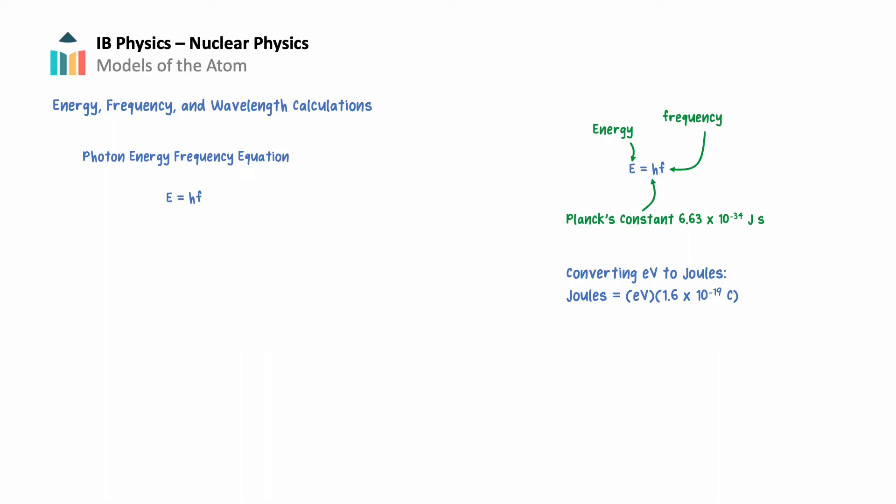Combining the photon energy frequency equation with the wave equation, we can also determine the wavelength of the photon. The wave equation is V equals F lambda, where V is the velocity, F is frequency, and lambda is the wavelength. When dealing with photons and electromagnetic radiation, the velocity is equal to the speed of light, C. Solving the equation for F, we get F equals C divided by lambda. Then substituting in C divided by lambda for F, we get E is equal to H times C divided by lambda. To solve for the wavelength, we multiply both sides by lambda and divide both sides by energy. The resulting equation is that the wavelength of a photon is equal to H times C divided by E.